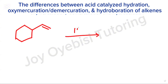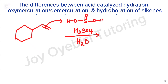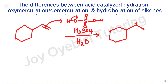If you have this compound and you have H2SO4 and H2O, the first step is protonation. This is going to pick up hydrogen from the double bond. The hydrogen attaches to the less substituted side of that double bond, so the hydrogen attaches here.